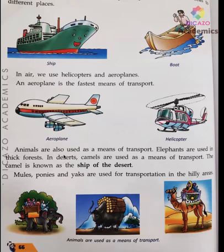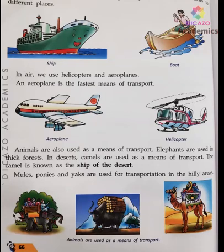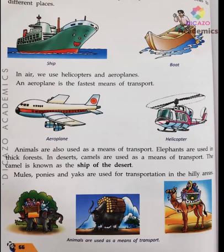Animals are also used as a means of transport. Elephants are used in thick forests — when people go into thick forest, they use elephants as a means of transport. In the desert, camels are used as a means of transport, because camels can easily travel in the desert. The camel is also known as the ship of the desert.